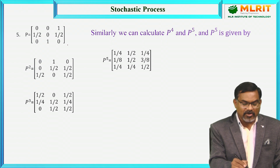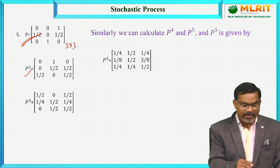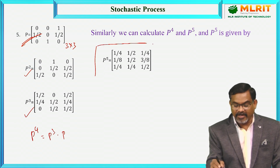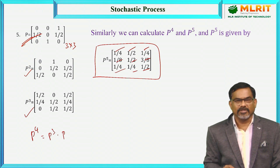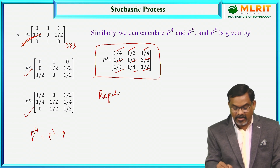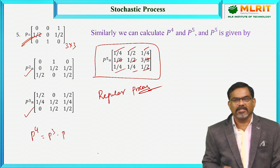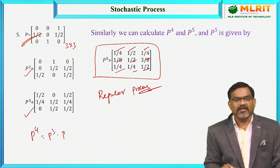Similarly, let us consider another example of a 3 by 3 matrix. The transition probability matrix is given. Let us find P squared, P cubed, P power 4, and P power 5. Here I have given directly the matrix P power 5, in which all the elements are non-zero — all are positive. Hence, the matrix is a regular matrix and the stochastic process is called a regular stochastic process. To check whether a given matrix is regular, we need to find its powers and all elements of P power M must be positive. To show it is irregular, a simple condition: check whether the principal diagonal has the element 1. If there is a 1, it is simply irregular.